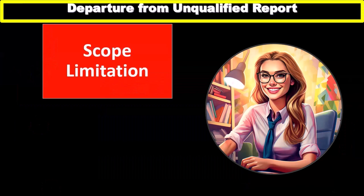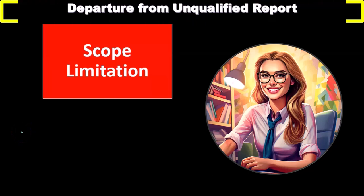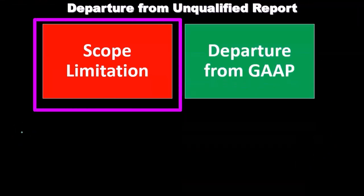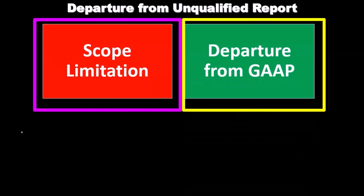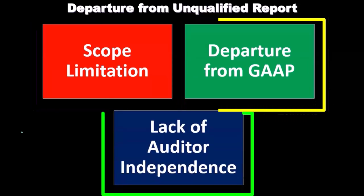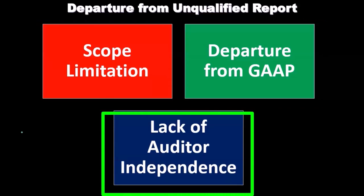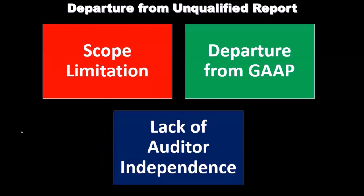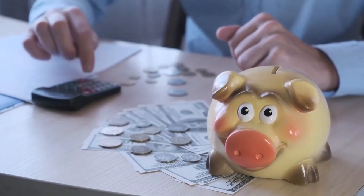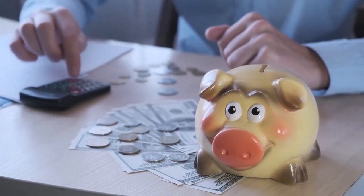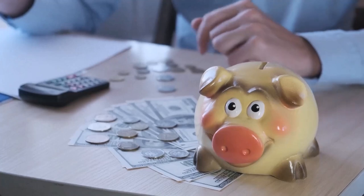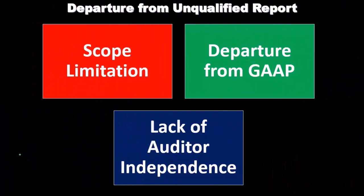When might these departures happen? We could have a departure from the standard unqualified report if there is a scope limitation, a departure from GAAP — generally accepted accounting principles — or a lack of auditor independence. These could be issues that would require us to deviate from the unqualified opinion. If there's a significant deviation or departure from generally accepted accounting principles, that would be an issue because that's what our opinion is based on.